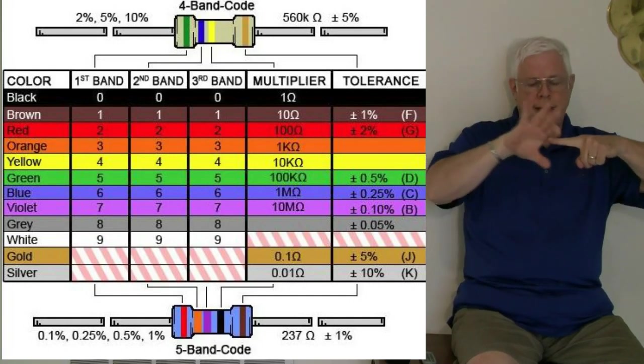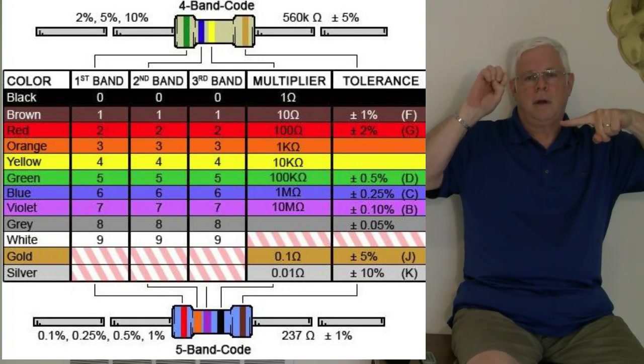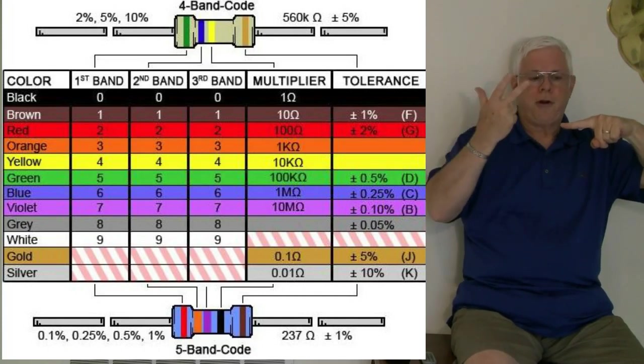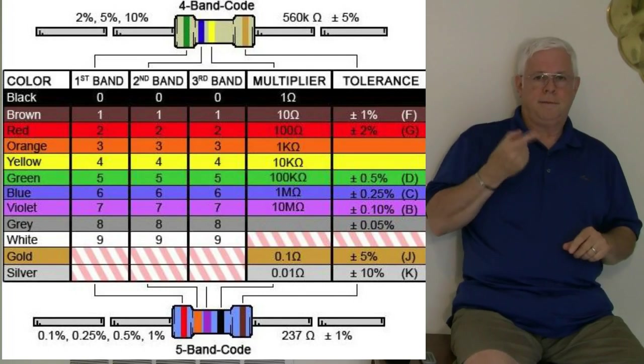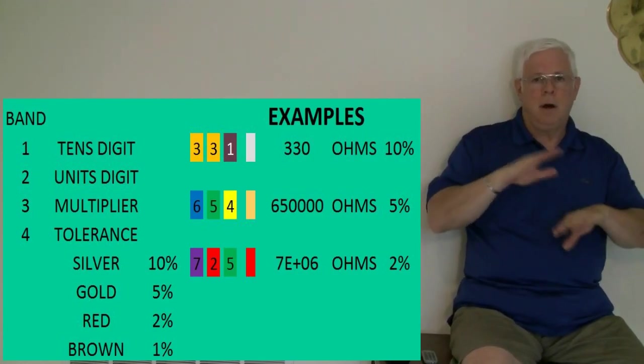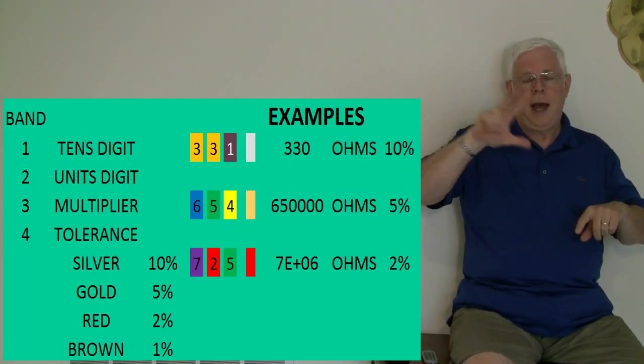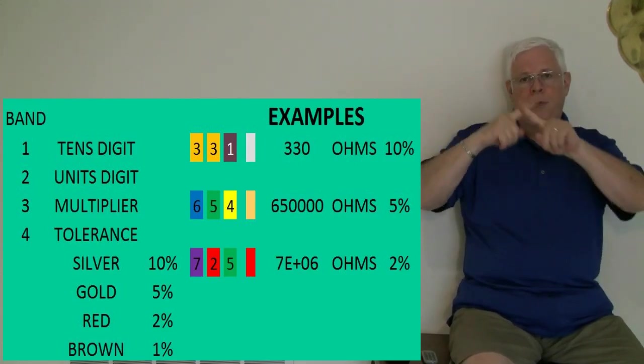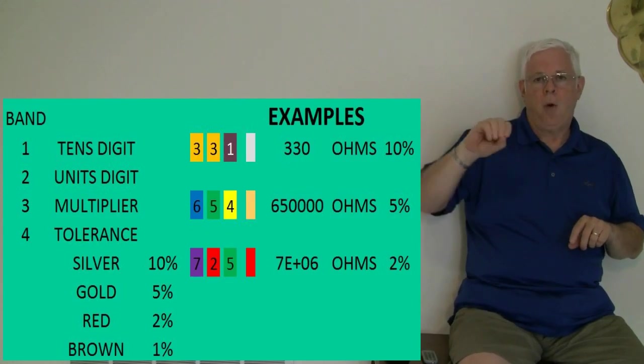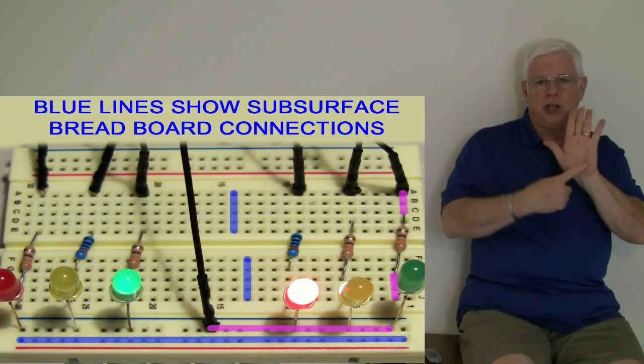There are four bands that show their value. The first band is the tens value, and the second band is the units value. The third band is the multiplier for the resistor. We're going to be looking for orange-orange-brown bands on the resistor. The first orange is for 30, the second orange is for 3, and the third brown is for a multiplier of 10. So 33 times 10 is a 330-ohm resistor.